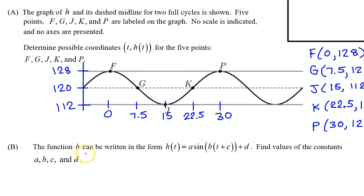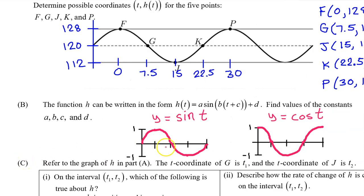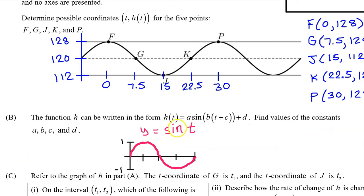Part B. The function h can be written in the form h(t) = a sin(b(t+c)) + d. Find the values of the constants a, b, c, and d. Hopefully you have memorized what the parent functions sine t and cosine t look like. Notice that the cosine t function starts at its highest value, falls to its lowest value, and then ends at its highest value again.